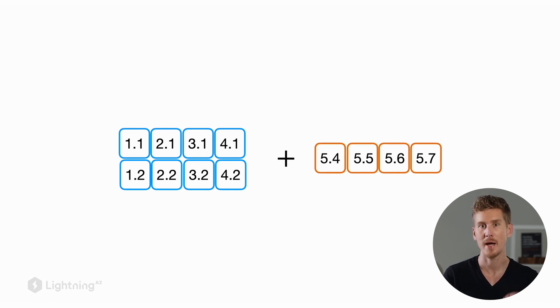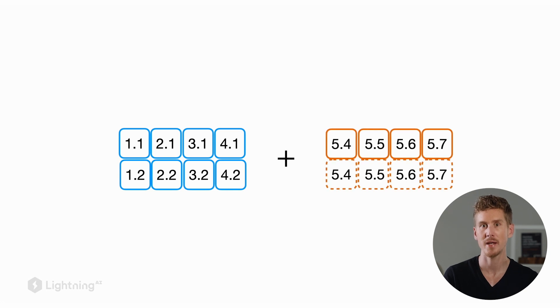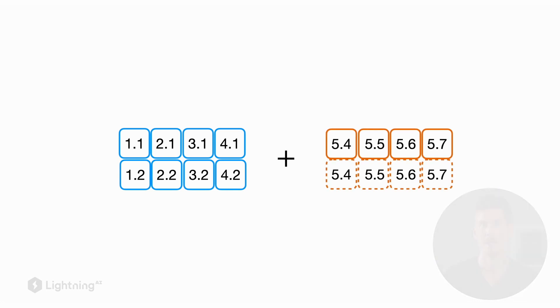However, PyTorch would implicitly generate this new dimension so that the dimensions between the left hand side and the right hand side match, and then we can add these two matrices together. To show you that this actually works, here's a code example that you can try out.